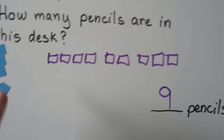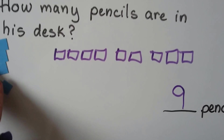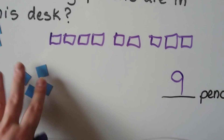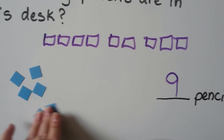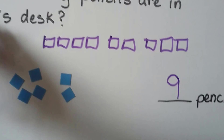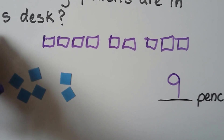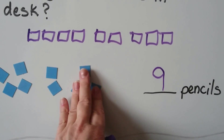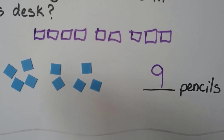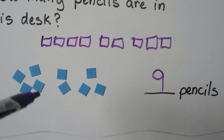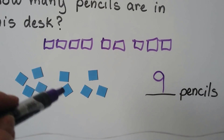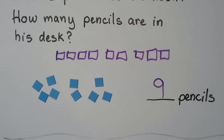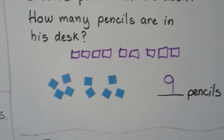We could have used counters: four counters for the four pencils, then two more counters, then three more. We add them all and count: one, two, three, four, five, six, seven, eight, nine. That's how many pencils are in his desk.